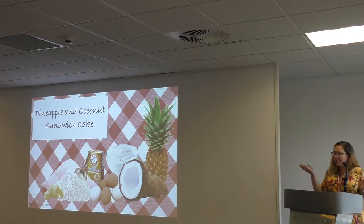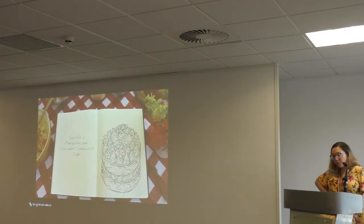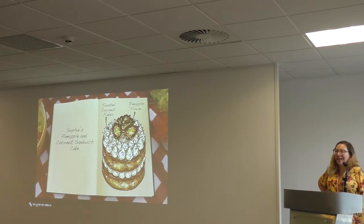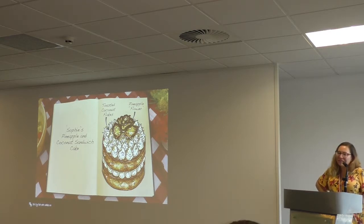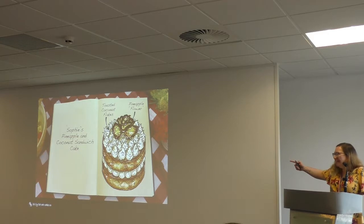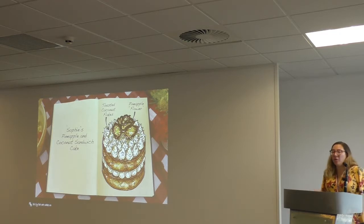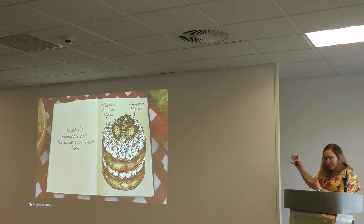Option three involves layering the coconut sponges with Italian meringue buttercream. And option four: we're going to make a pineapple and coconut sandwich cake using these ingredients. I have a feeling I can tell what we're going to do with option four — I have a sense of where we'll end up. When I saw the ingredients alone, given I'm not a professional baker, I really had no idea what they meant. I kept picturing a lunch sandwich, which is not really what this is.